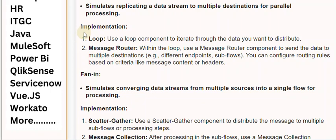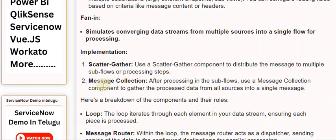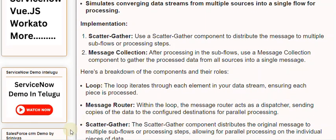Fan-in simulates converging data streams from multiple sources into a single flow for processing. To implement it, use a scatter-gather component to distribute the message to multiple subflows or processing steps. After processing in the subflows, use a message collection component to gather the processed data from all sources into a single message.